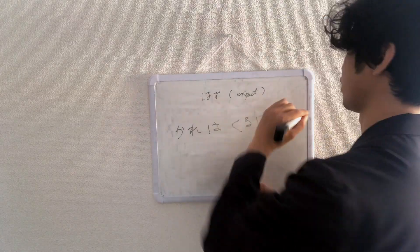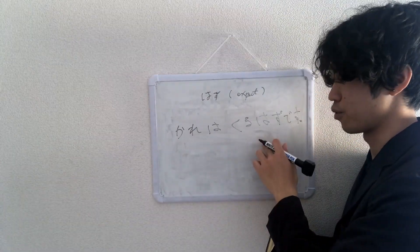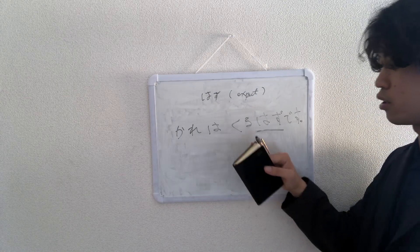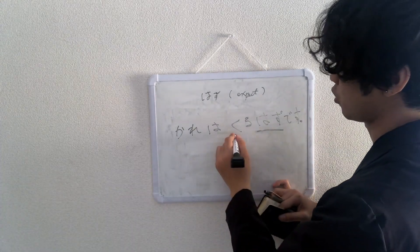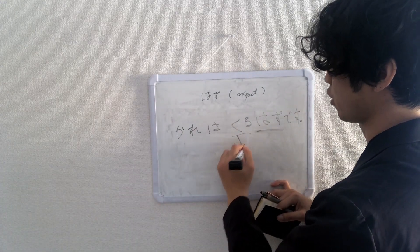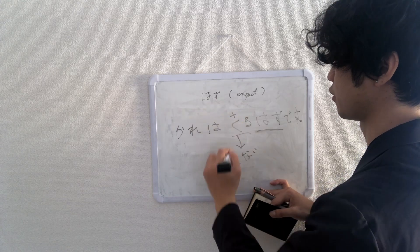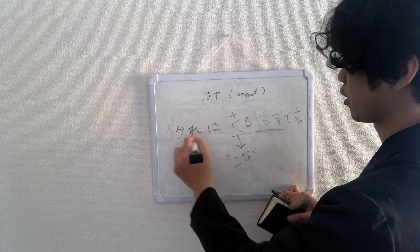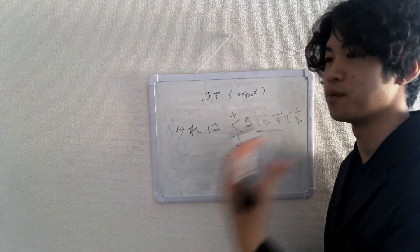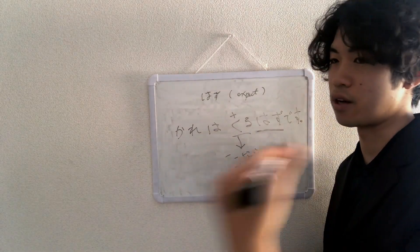So he is supposed to come, right? はず here. Now, you can change this 来る to 来ない. It's a negative form. So 来る is affirmative, 来ない is negative. Now, when you say 彼は来ないはずです, you expect him not to come. So you might be surprised if he comes.